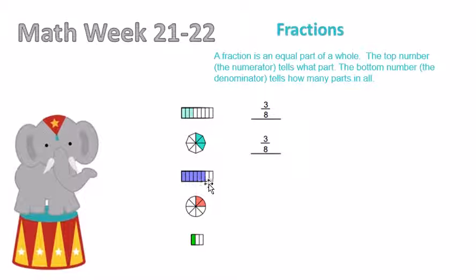Here we have one, two, three, four, five, six, seven, eight. And we have one, two, three, four, five, six shaded in — that would give us six eighths.